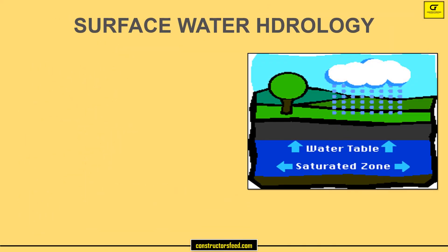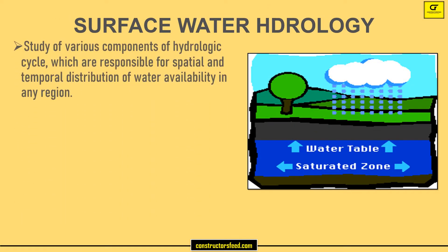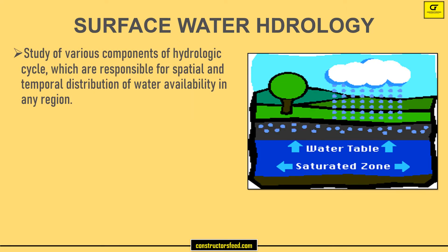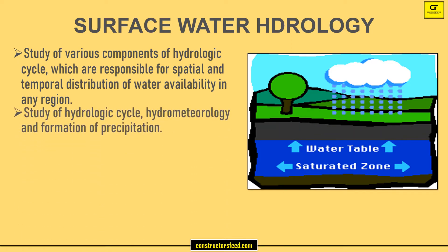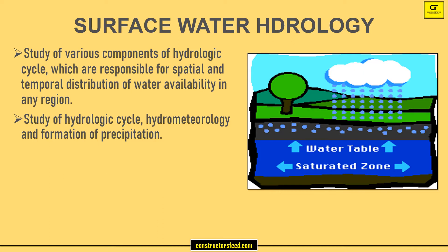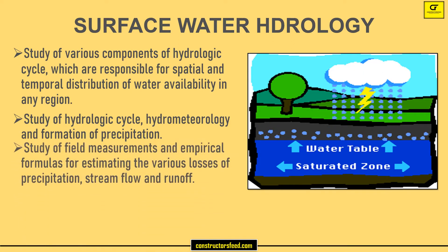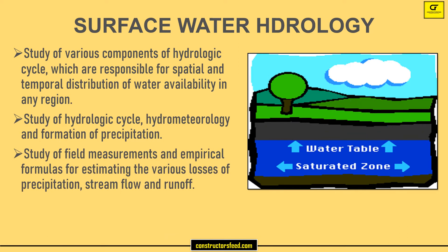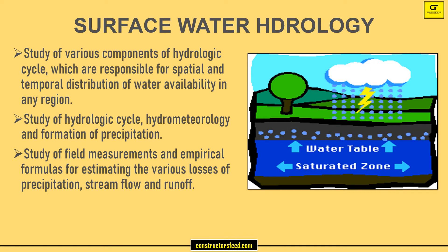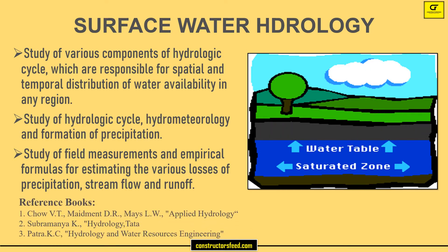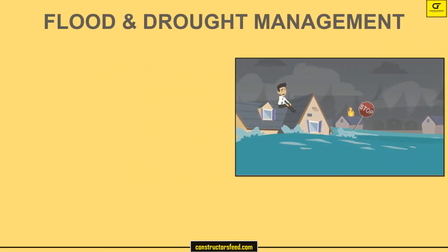Surface Water and Water Hydrology: study of various components of the hydrologic cycle which are responsible for spatial and temporal distribution of water availability in any region, study of the hydrologic cycle, hydro-meteorology, and formation of precipitation, and study of field measurements and empirical formulas for estimating various losses of precipitation, stream flow, and runoff.